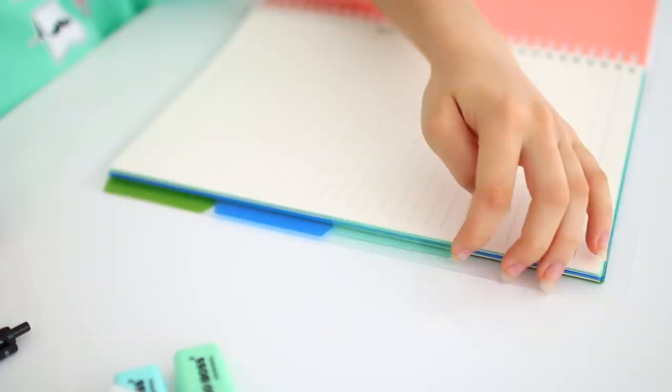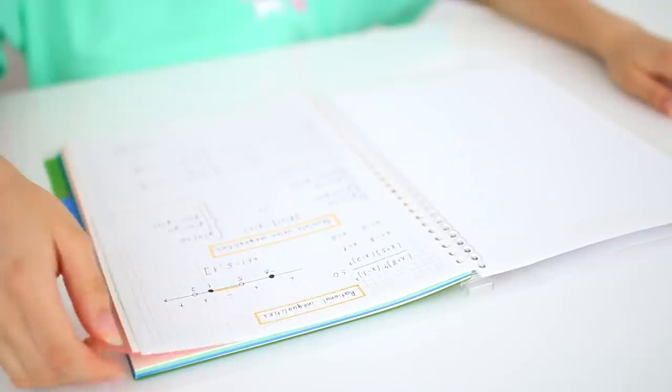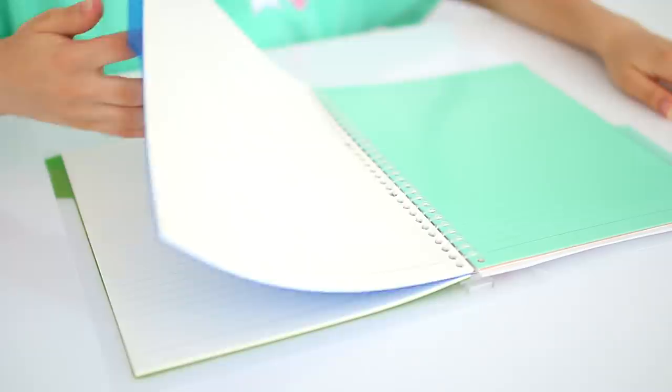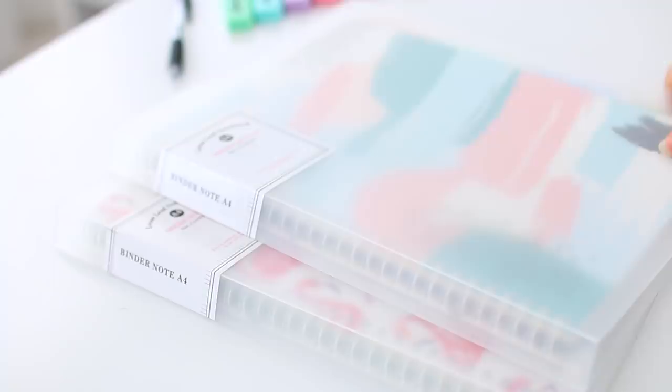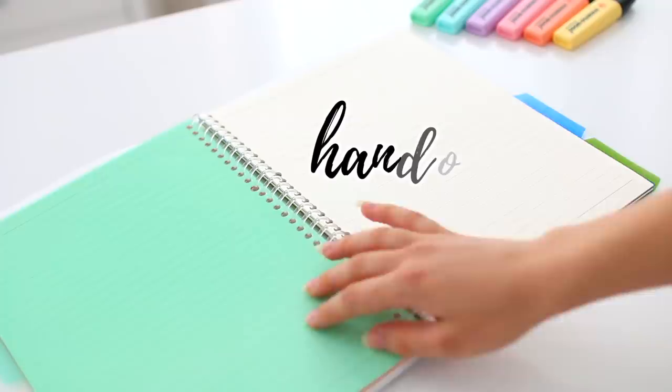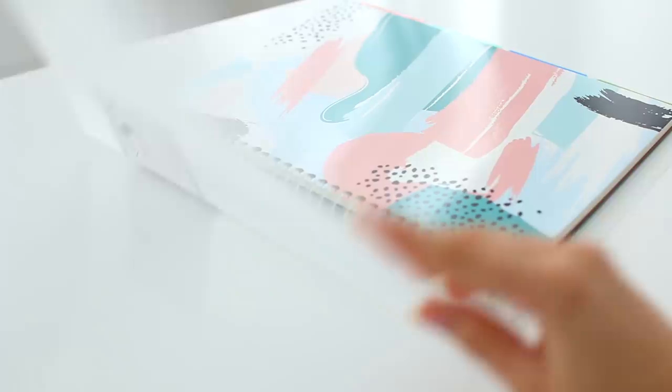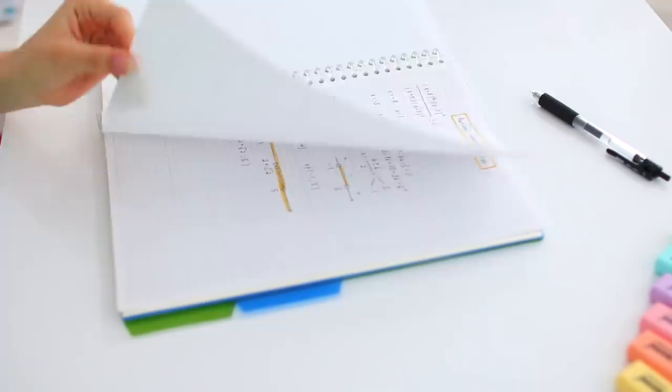Inside my binder notebook I have different dividers. I like to divide it by different subjects so that I can have all my notes for different subjects inside this one binder. However, a lot of my friends have a binder notebook for each subject and then they further divide it by different categories like notes, assignments, essays, and handouts.